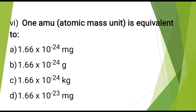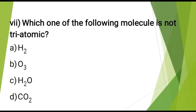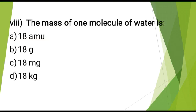One amu (atomic mass unit) is equivalent to? The correct answer is: 1.66 x 10⁻²⁴ g. Which one of the following molecules is not triatomic? The correct answer is: H₂. The mass of one molecule of water is? The correct answer is: 18 amu.